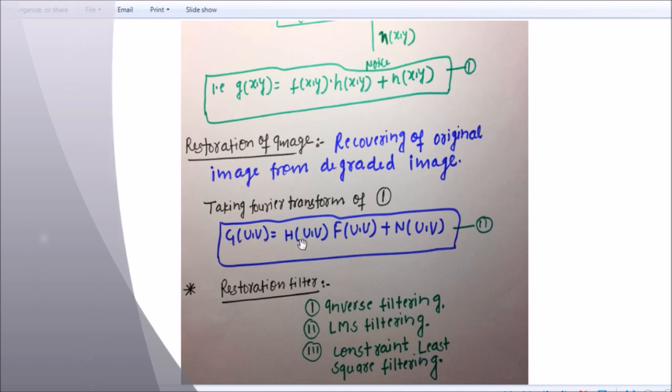After taking Fourier transform I will get G(u,v) equals H(u,v) dot F(u,v) plus N(u,v). So this is your degraded function, this is your original source, this is your noise, and this is degraded image. What are the types of restoration filters? Restoration filter is a kind of filter which helps restore degraded image to original image.